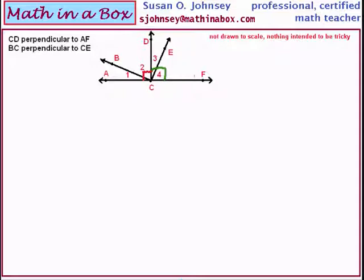Now let's read the next statement. The second statement says that BC is perpendicular to CE. So the diagram gets a little tricky here to draw but we actually have three pairs of perpendicular right angles.